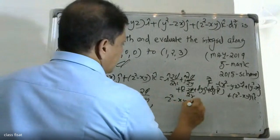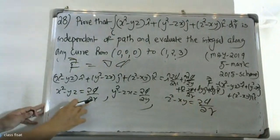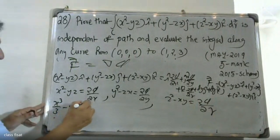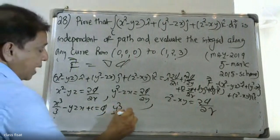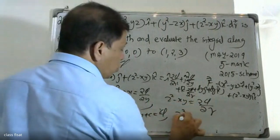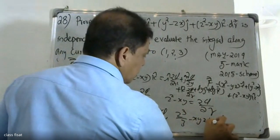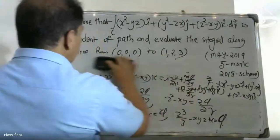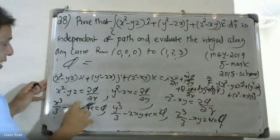Integrating: from ∂φ/∂x = x² - yz, we get φ = x³/3 - xyz + f(y,z). From ∂φ/∂y = y² - zx, integrating gives y³/3 - xyz. The scalar potential φ = x³/3 + y³/3 + z³/3 - xyz.